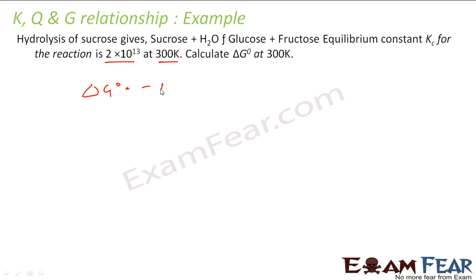Delta G naught is very easy, it's nothing but minus RT ln K. Put the value. So it is minus R, which is 8.314 joule per mole per kelvin, into temperature, which is 300 kelvin, into ln K. K is 2 into 10 to the power 13.